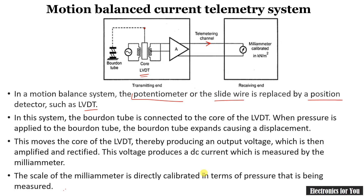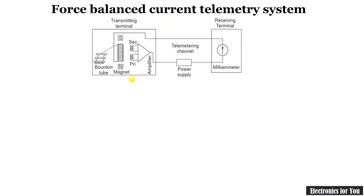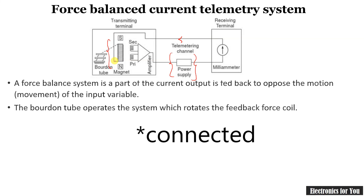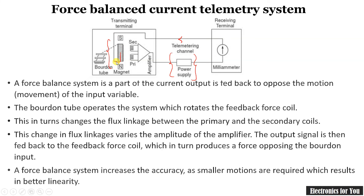The scale of the millimeter is directly calibrated in terms of the pressure being measured. In the force balance current telemetry system, instead of using an LVDT, a magnetic coil is used. Whenever there is movement by the Bordon tube, the coil will change. The output of this is connected to an amplifier, which feeds to the millimeter, and the output is also fed back to the coil. This changes the flux linkage between the primary and secondary. A force balance system increases accuracy as smaller motions are required, which gives better linearity.